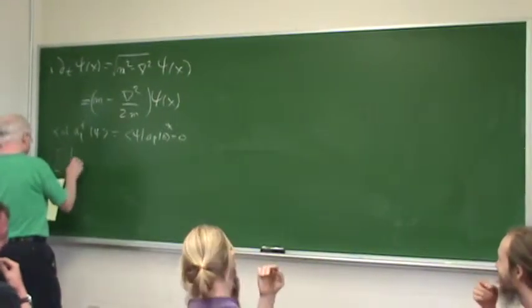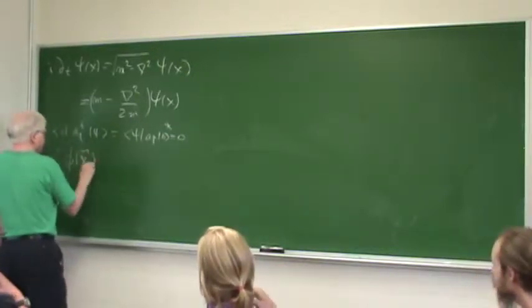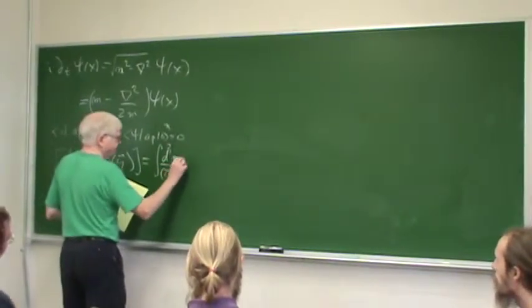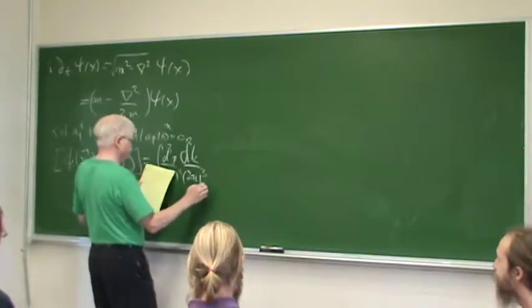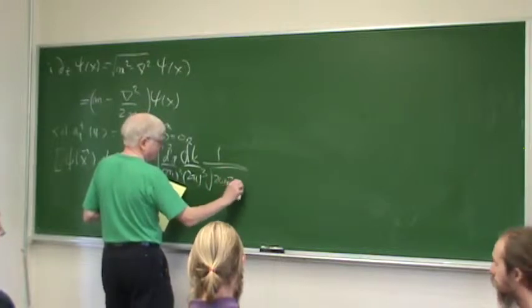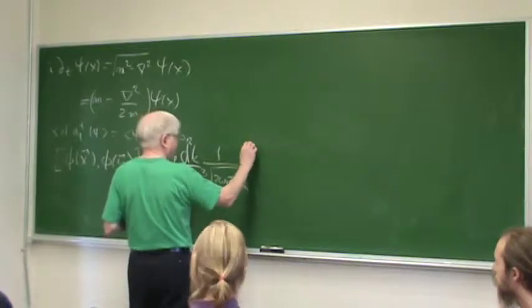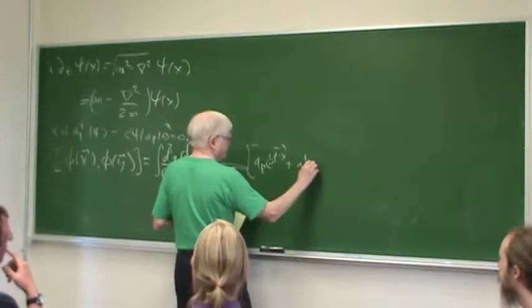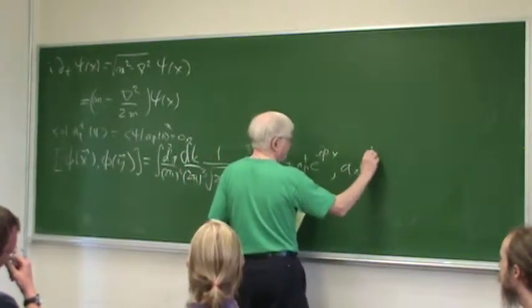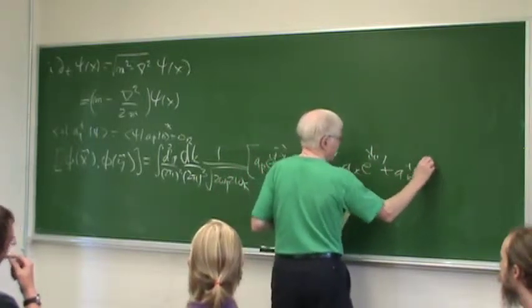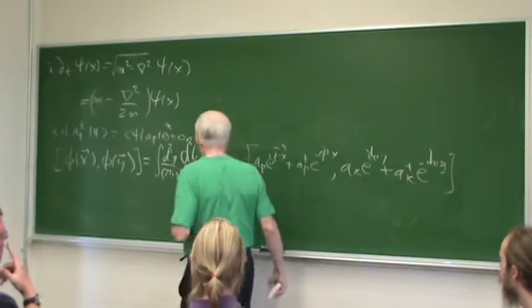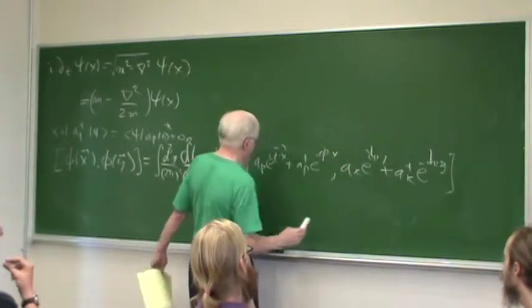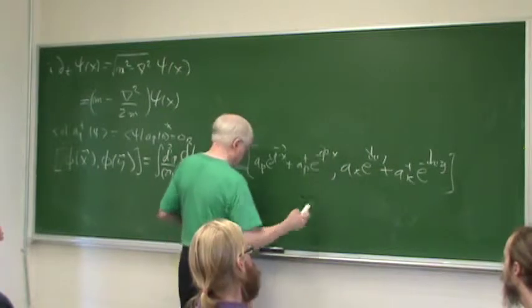All right, the equal-time commutator. Let's set t = 0 to simplify the algebra. We want [phi(x), phi(y)]. We have integral d³p/(2π)³ d³k/(2π)³ 1/sqrt(2 omega_p · 2 omega_k), and then the main thing: [a(p) e^(ip·x) + a-dagger(p) e^(−ip·x), a(k) e^(ik·y) + a-dagger(k) e^(−ik·y)]. We find [a(p),a(k)] = 0, [a-dagger(p),a-dagger(k)] = 0, but [a(p),a-dagger(k)] is non-zero and [a-dagger(p),a(k)] is non-zero.